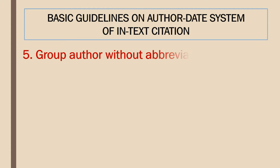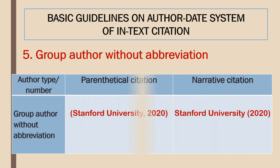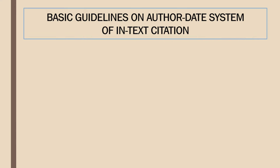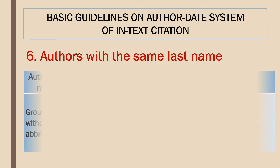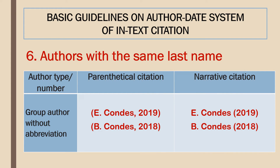Group author without abbreviation: in this case, cite the full name of the group or organization and follow the same rules as for one author. Authors with the same surname but who are different persons should be acknowledged in the text by including the initial of their first name. For example: E. Condess (2019) and B. Condess (2018). This implies that E. Condess and B. Condess are two different persons who wrote two different academic texts.